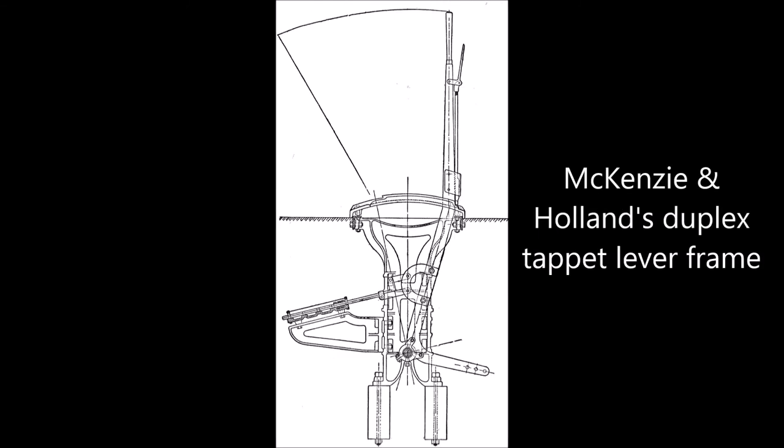In the Mackenzie and Holland early pattern frame the tappets are actuated by means of a cam which is carried on a turned shaft and operated at the commencement and finish of the lever's stroke by means of a stud fixed to the lever close under the floor plates. The locking is placed horizontally in one large box provision being made for five bars in each channel, two underneath the tappet and three on top.